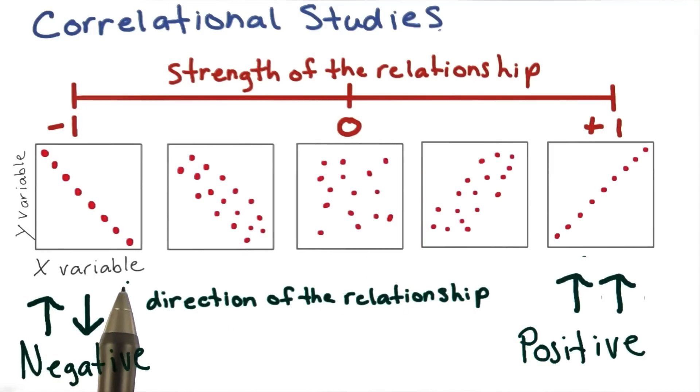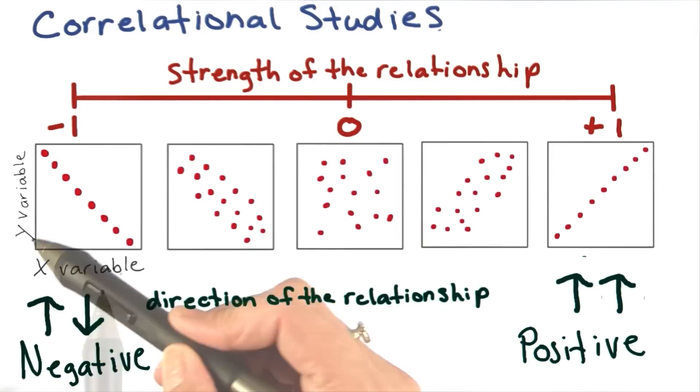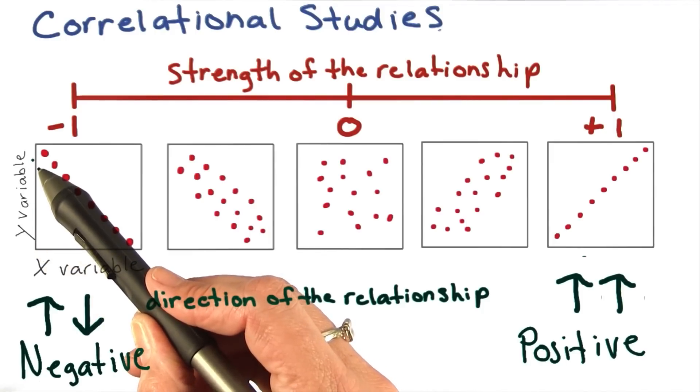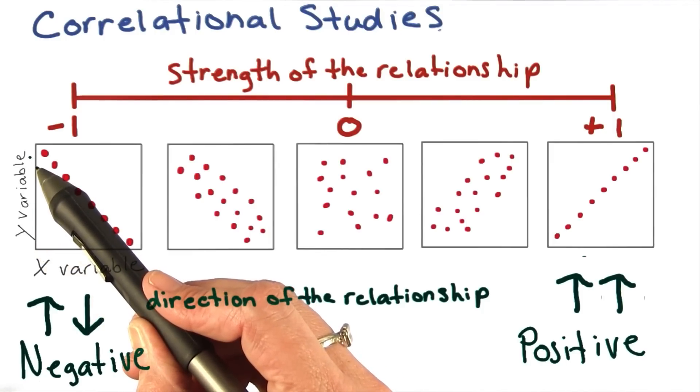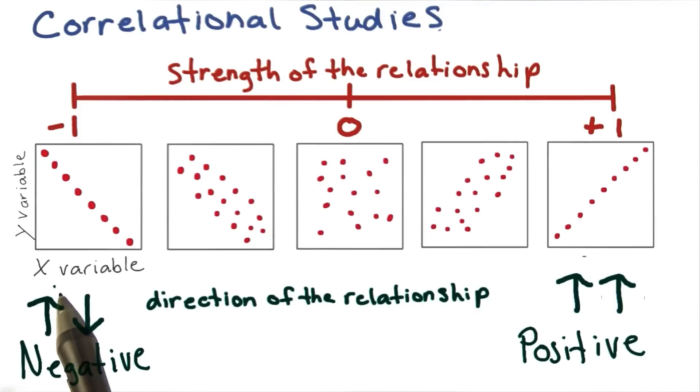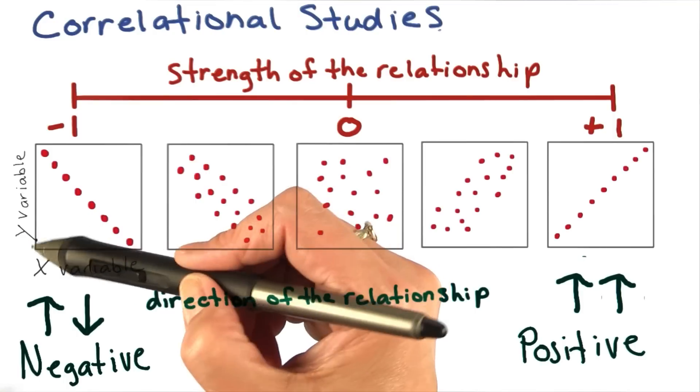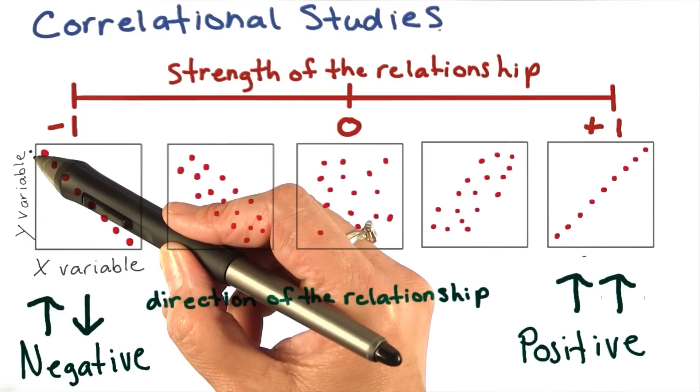Here, we have our x variable, which is our predictor variable, and our y variable, which is our criterion variable, or what is to be explained. In our study, the x variable was the number and type of chores, whereas the y variable was the number of sexual encounters.